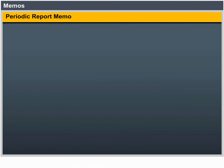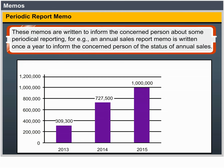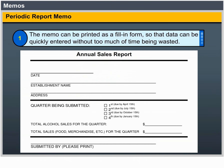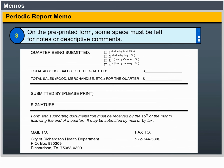Periodic Report Memo: These memos are written to inform the concerned person about some periodic reporting — for example, an Annual Sales Report Memo written once a year. Since such memos are written regularly, one can save time by using pre-printed formats. Keep the following points in mind: 1. The memo can be printed as a fill-in form so that data can be quickly entered. 2. The form should be easily duplicated for future use. 3. Some space must be left on the pre-printed form for notes or descriptive comments.